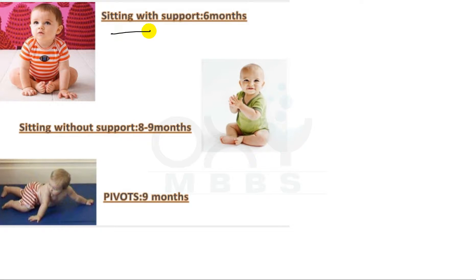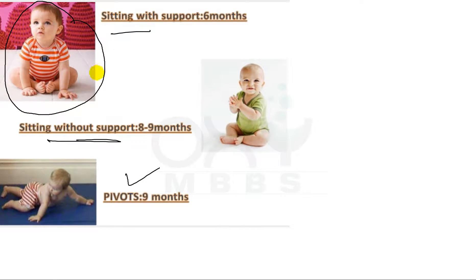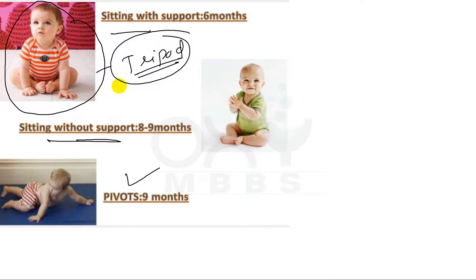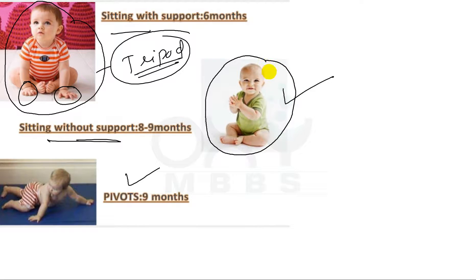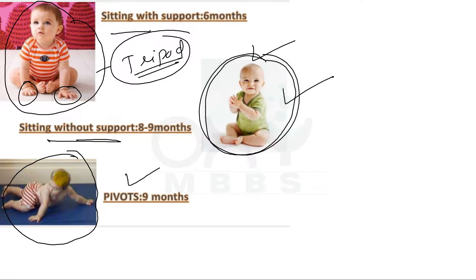Now coming to pictures related to sitting with support, sitting without support, and pivot position. This is the position where the baby is sitting in a tripod fashion — in tripod position the baby takes support from his or her hands. In this picture you can see the baby is sitting without any support, very freely. And if the baby is sitting or creeping in this position, it is the pivot position.